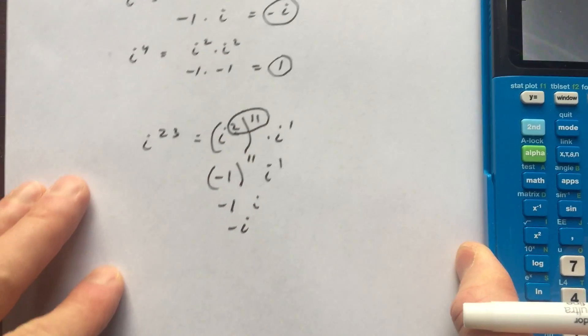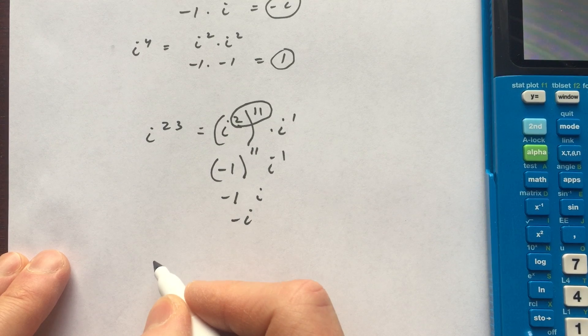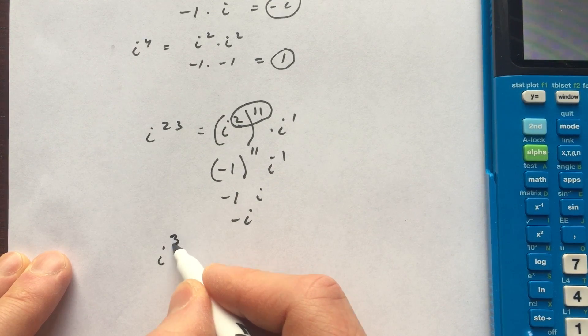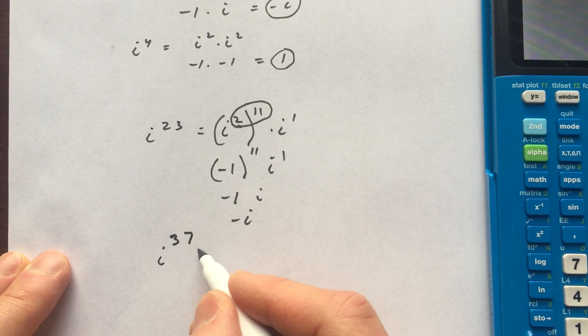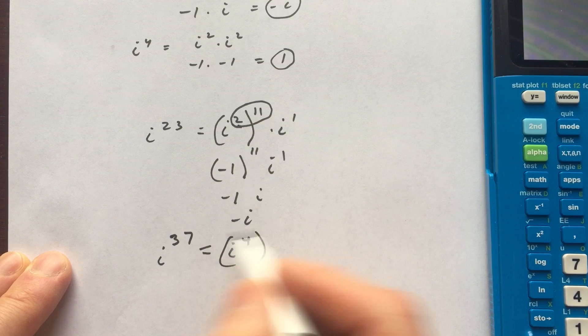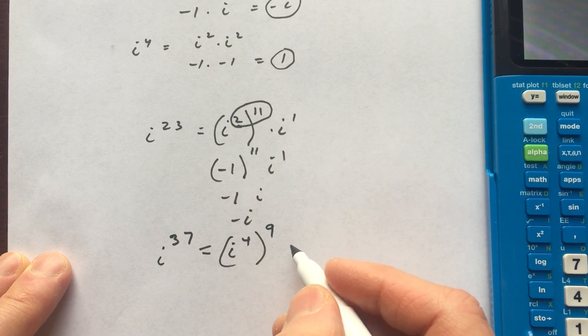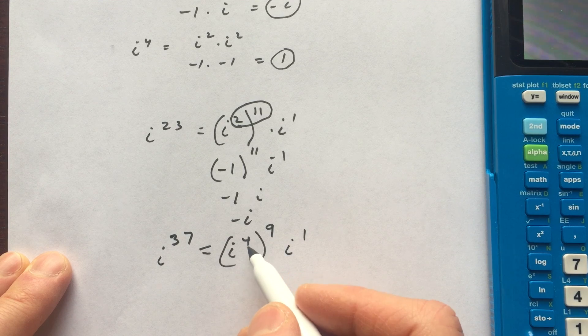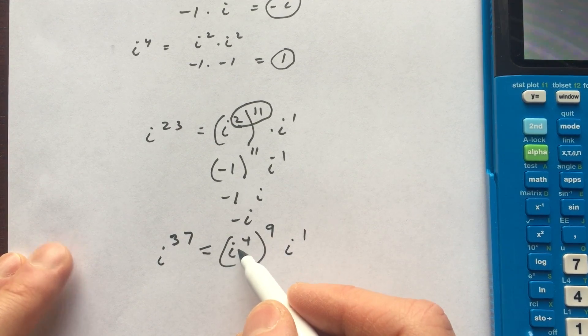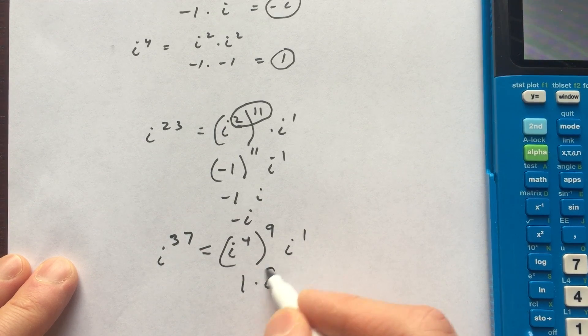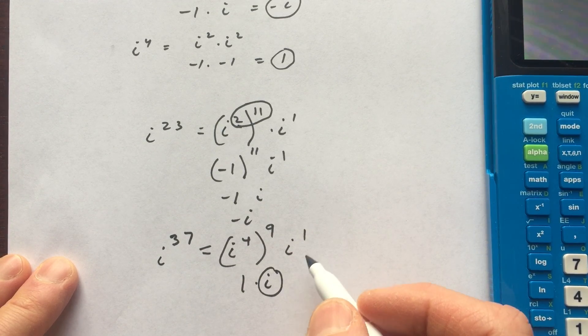Let's just look at one more quick example. And I'll show you another technique. So say, for example, you wanted to find out what's i to the 37th. So another way to do this problem is you can say, well, how many times does 4 go into 37 evenly? 9 times, right? With 1 left over. Now, we know that i to the 4th is 1. So this is really just going to be 1 times i, which is i. So this is another way to do it.